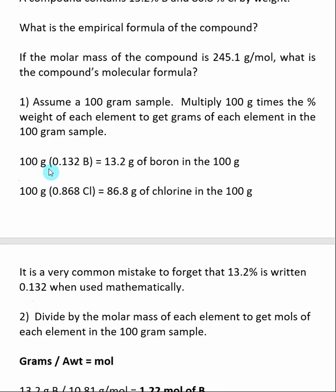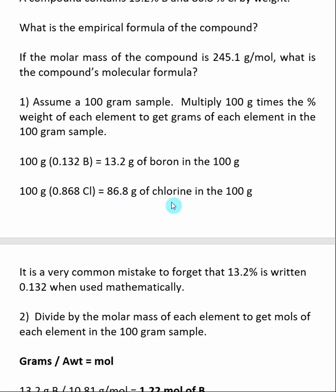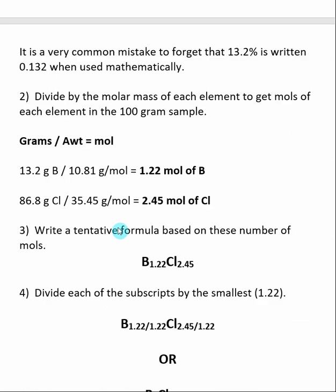Taking 100 grams and multiplying by the percent boron, we find that 13.2 grams of boron are present. Likewise, taking 100 grams and multiplying by the percent chlorine, we get that 86.8 grams of chlorine is present. We don't want grams — what we want is moles — so in the next step, we want to find out how many moles of each element were present in that original 100-gram sample.